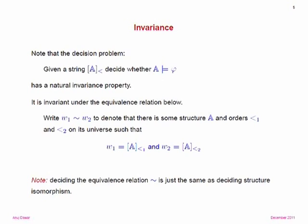This equivalence relation is really the structure isomorphism problem: two strings are equivalent if they represent isomorphic structures. This is equivalent to the graph isomorphism problem, whose complexity is the subject of much study. It's not known to be in polynomial time; it's in NP but not believed to be NP-complete — one of these intermediate problems whose status is not fixed.